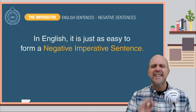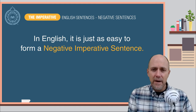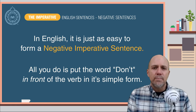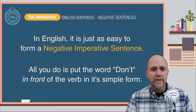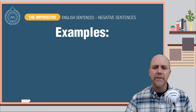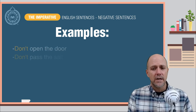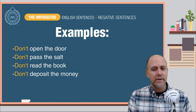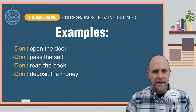In English, it is just as easy to form the imperative in negative sentences. All you do is put the word 'don't' in front of the simple form of the verb. Here are a few examples of the negative imperative in English: Don't open the door. Don't pass the salt. Don't read the book. Don't deposit the money.